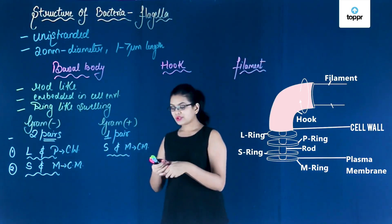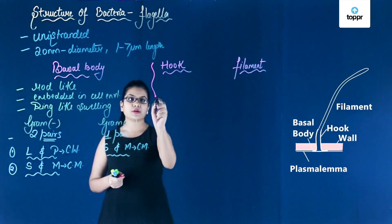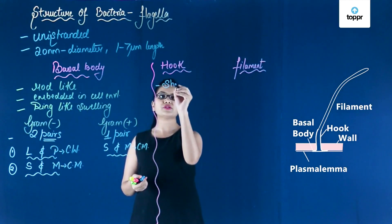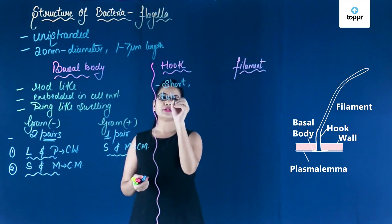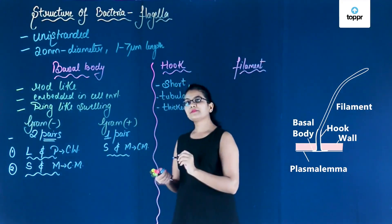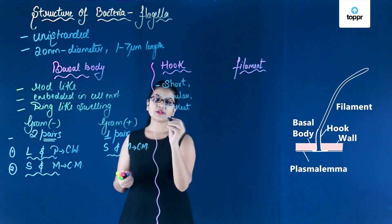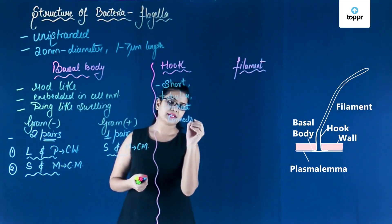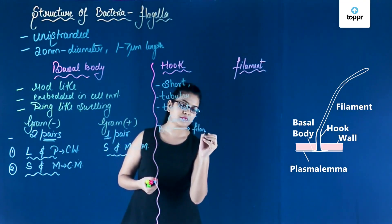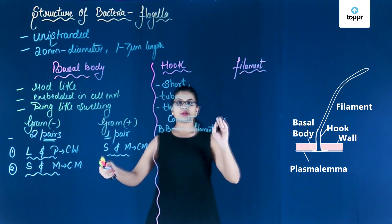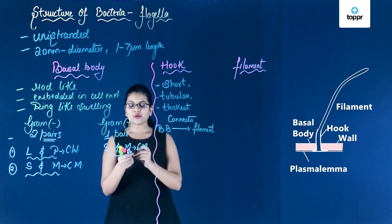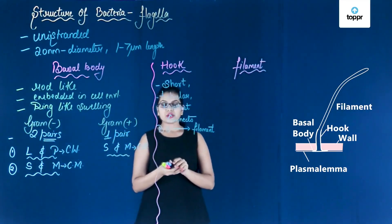That was the first part of the flagella — the basal body. The second part is the hook. The hook is a short tubular structure and it is the thickest part of the flagella. Its function is to connect the basal body with the filament. You can see in the figure that the hook is a curved structure — short, tubular, and the thickest part of the flagella, connecting the basal body with the filament.